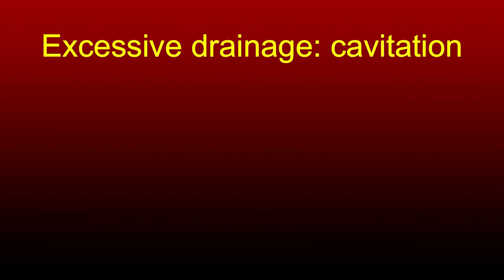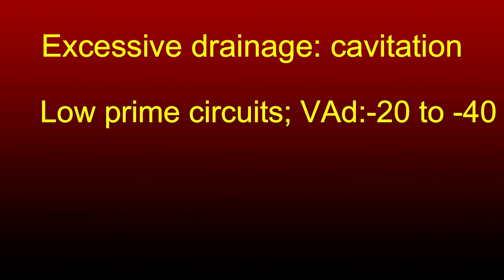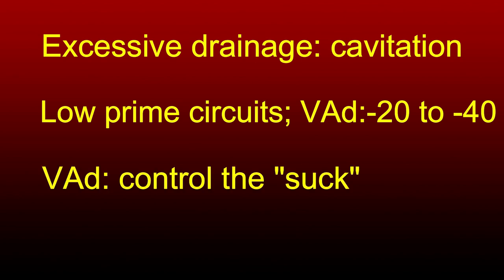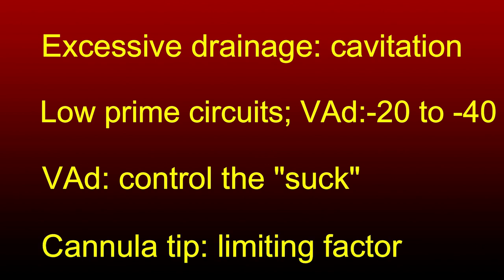If you use excessive drainage, the blood vessel collapses around the holes of the venous cannula, leading to cavitation — also called chatter. This can also happen if you use a bigger cannula in a smaller vein or a smaller cannula with excessive drainage. One can deal with it by applying a partial clamp on the venous line. Low prime circuits with vacuum applied to the venous circuit to minus 20 to minus 40 mmHg help control drainage from the heart to the reservoir. The tip of the venous cannula is the most important limiting factor — bigger cannula means better drainage — however, the vessel being cannulated must also be of adequate size.